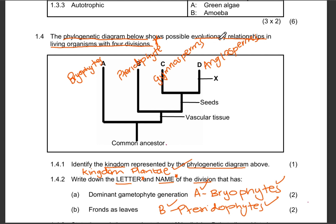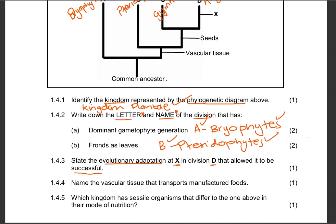What we have at X is basically a trait or evolutionary adaptation that makes the angiosperms group different from all the other groups, which is the presence of fruits and also flowers. So the adaptation at X would be fruits — or someone could have said flowers — because the plants in angiosperms are flowering plants and they also produce fruits. One mark.